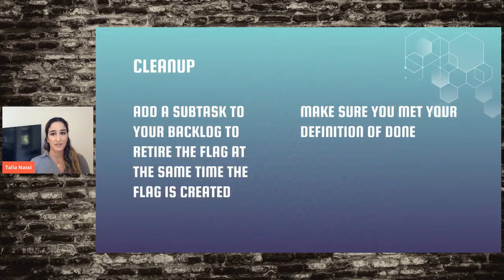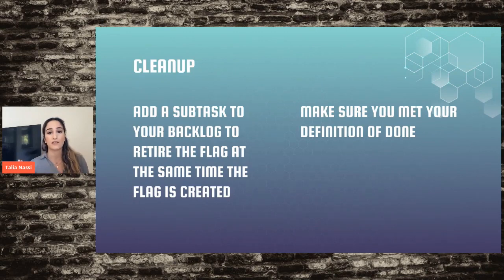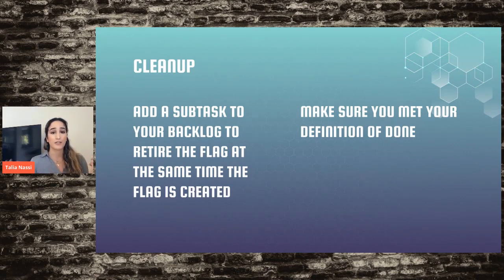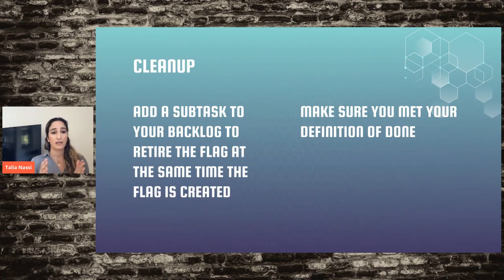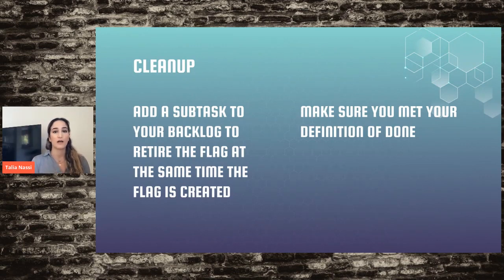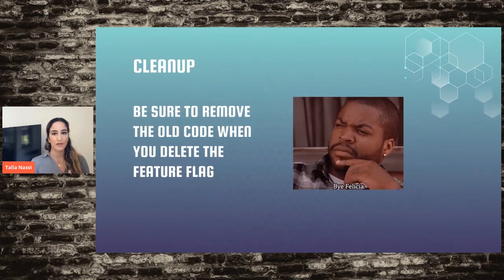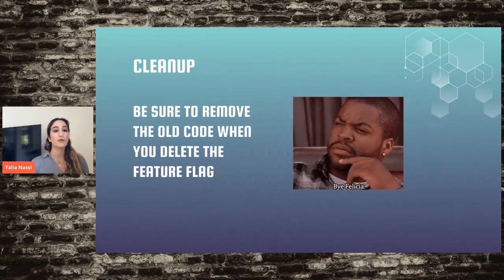Another helpful thing is to add a subtask in your backlog to retire the flag at the same time the flag is created. When you create the ticket to create the flag, also create a ticket to delete the flag once you reach your definition of done. This works well in a scrum team — make sure along with tasks to create and implement the feature flag, you also have a task to delete it. Also make sure to remove the old code when you delete the feature flag.